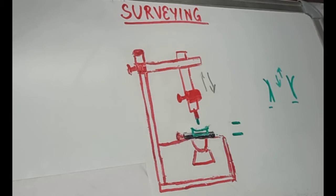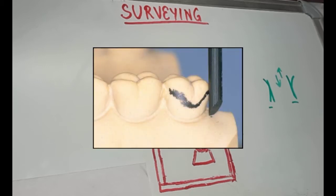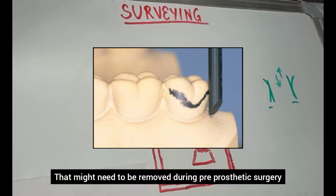Now, after surveying for guiding planes, retention and interferences and aesthetics, we draw the survey line on the tooth, marking the height of contour for which carbon marker is used. A survey line is drawn on each abutment tooth across the entire circumference of the tooth. You can also use it to mark the bony interferences that may provide as the area of interferences.